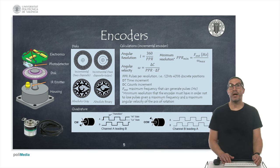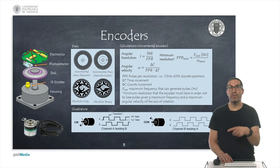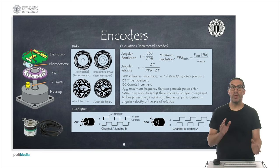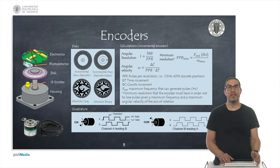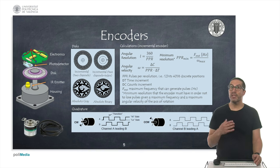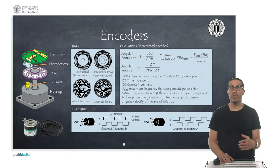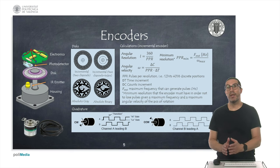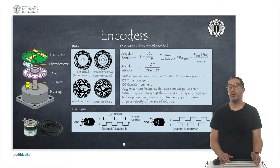I also show some simple calculations on how to compute the angular velocity from the rotation of an axis using an incremental encoder, by measuring the increment of pulses between periodic time periods. One of the most important parameters of incremental encoders is the pulses per revolution, or PPR. Depending on the maximum speed at which the axis will rotate and the maximum frequency the encoder can generate, we can calculate the minimum resolution needed in order not to lose pulses.